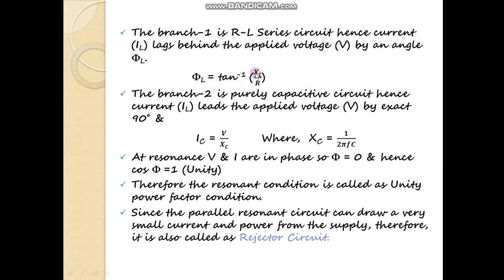Phi L equals tan inverse of XL upon R. In the second branch, branch 2, this is a purely capacitive circuit, hence the current IC leads the supply voltage by exactly 90 degrees. IC equals V upon XC, where XC is the capacitive reactance given by 1 upon 2 pi FC. At resonance, V and I are in phase, angle phi will be 0, and hence the power factor cos phi will be 1, that is unity. Therefore the resonance condition is called the unity power factor condition. Since this parallel resonance circuit draws very small current and power from the supply, it is also called the rejector circuit.